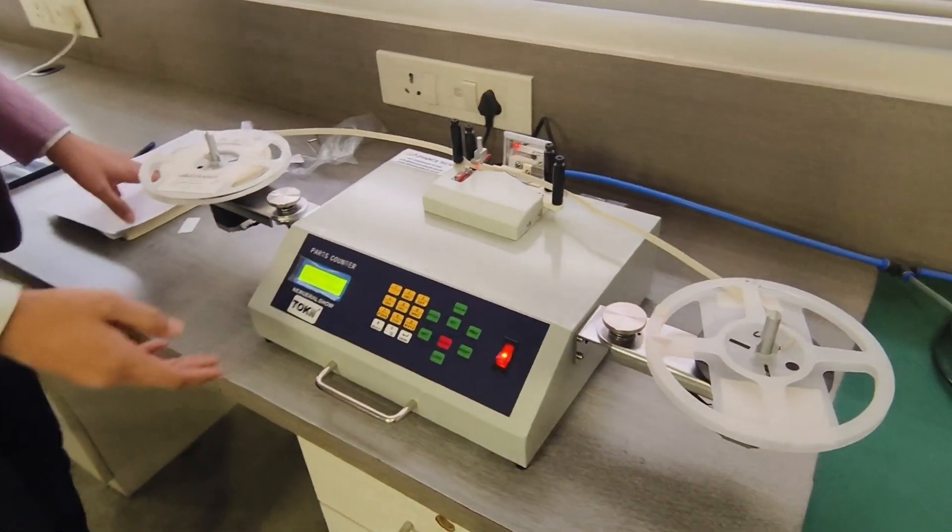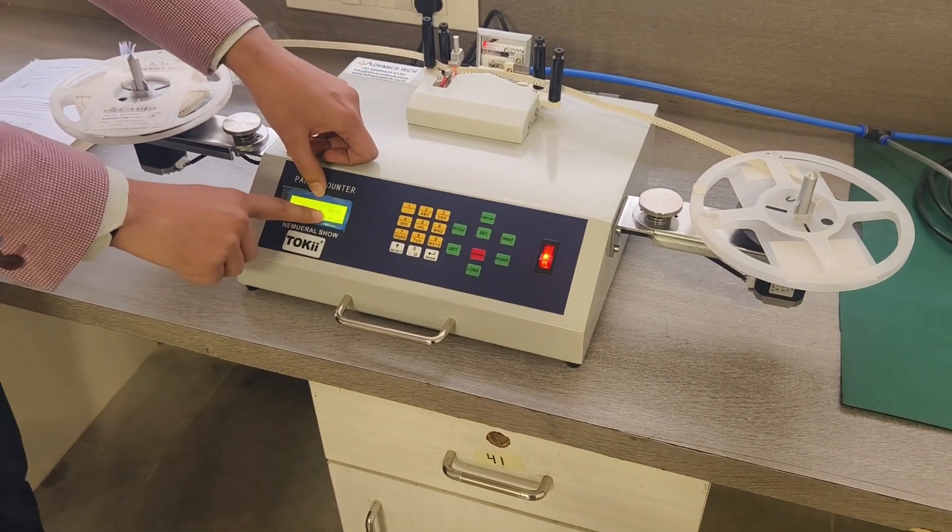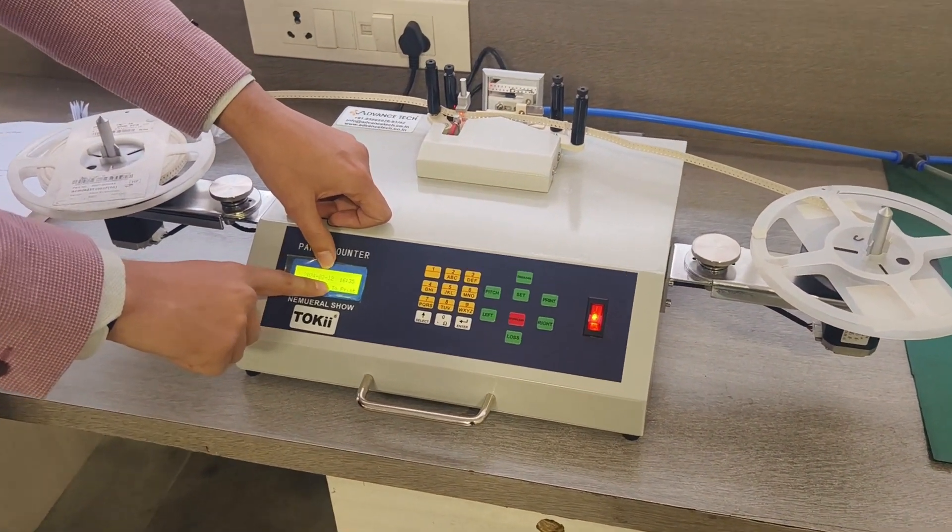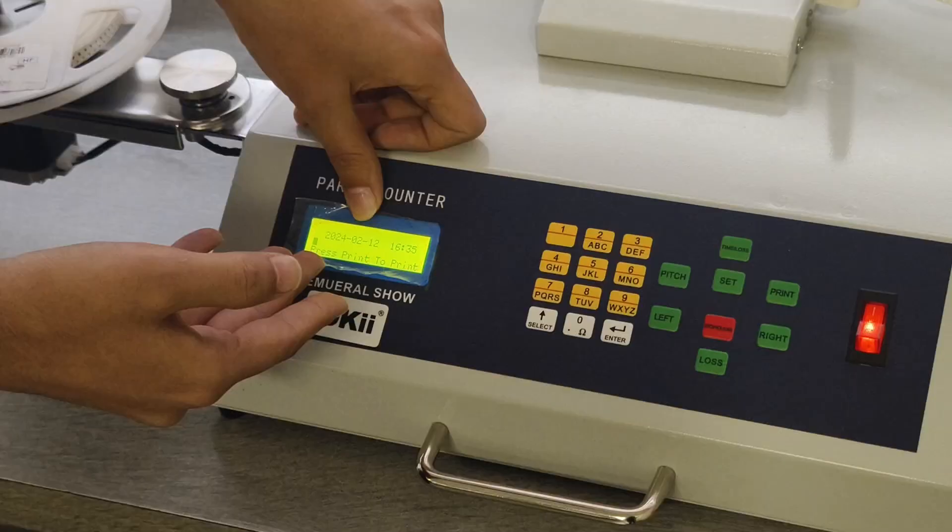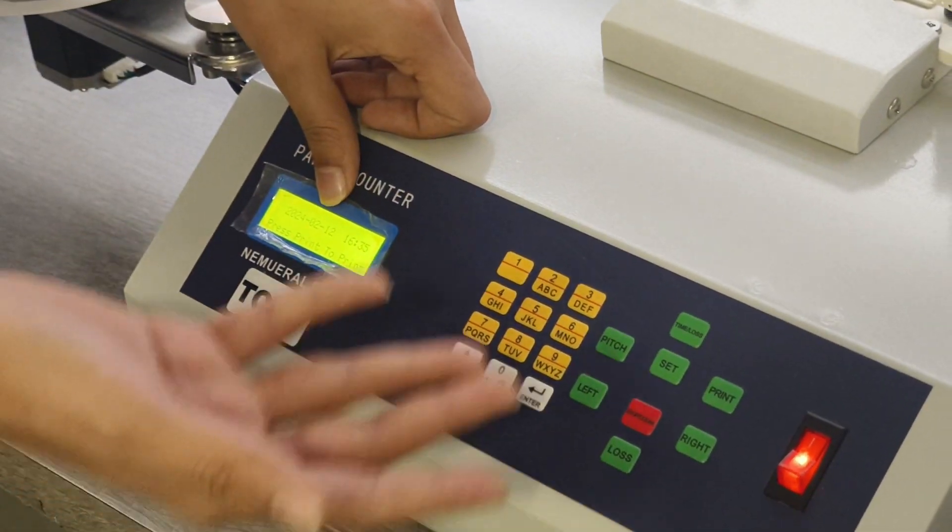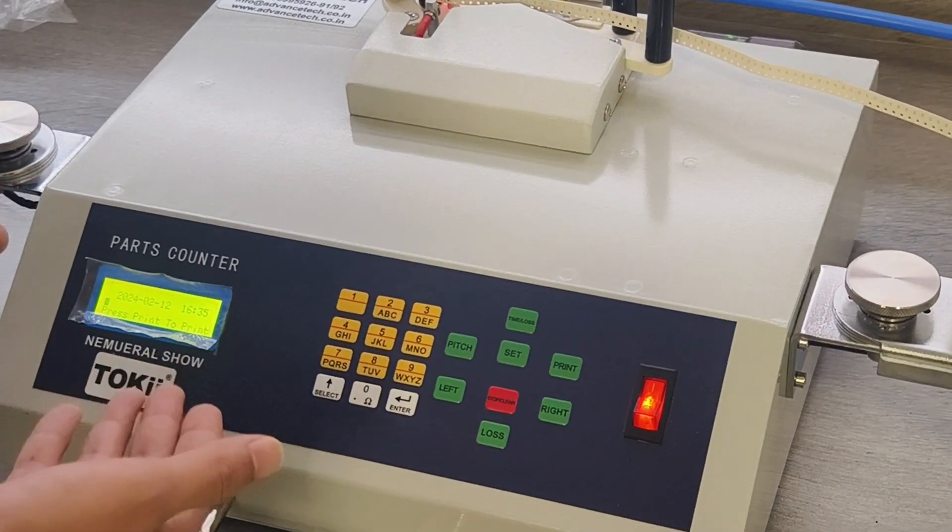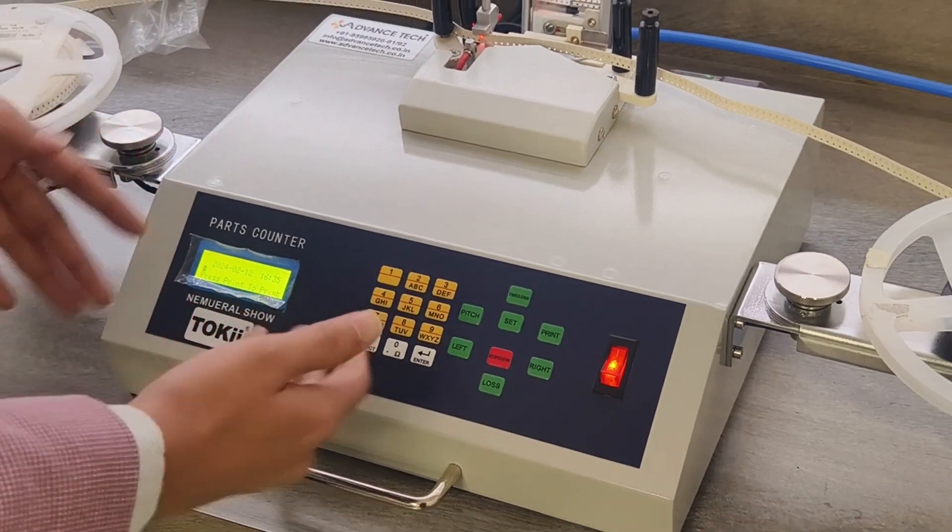You have a function of print here. You can put the date, time, you can put your company's name, and you can put the model of your chips, of your component, and then you can also print the total quantity like that.